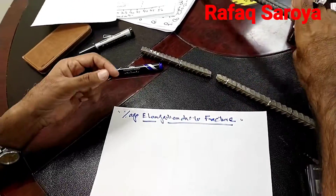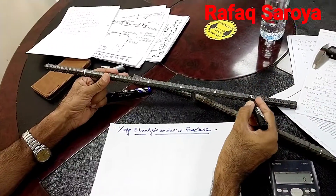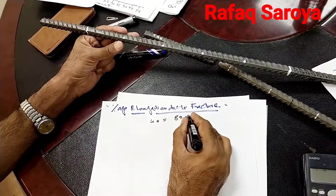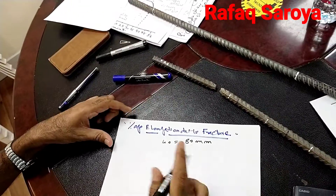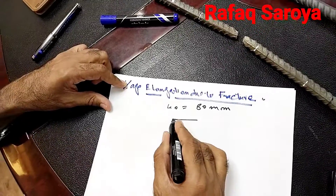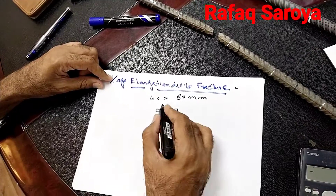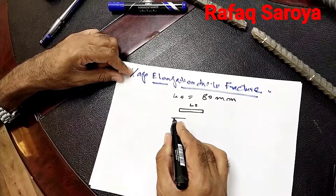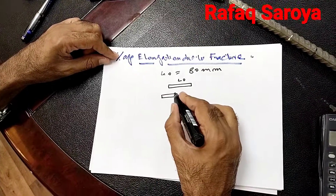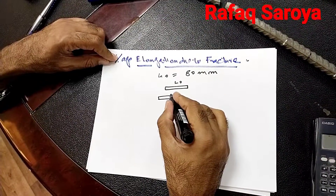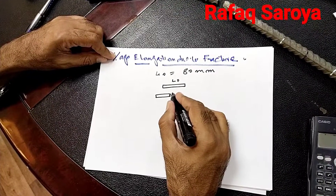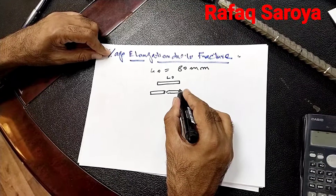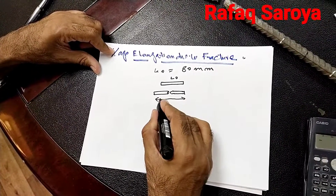This is my steel bar, over which I had already shown you that I have put a mark at the initial gauge length L0, equal to 80 mm. This is the bar of length L0. When this bar is being ruptured, at the time of the break its shape would become like this — the length will increase, and that length is given the name LU.